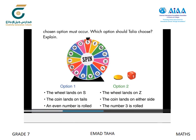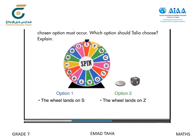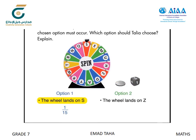The first event is the spinning of the wheel. For Option 1, the desired outcome is the letter S, which has a probability of 1/15. For Option 2, the desired outcome is the letter Z, which also has a probability of 1/15. Listen and look for students who explain the significance of the equal probabilities — the desired outcome of the wheel spin is equally probable in both options, so this event does not affect which option Talia should choose.